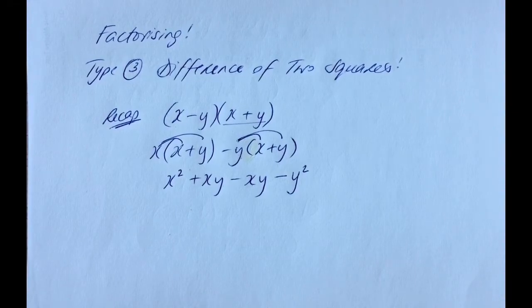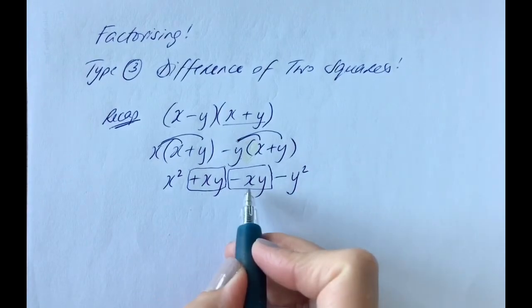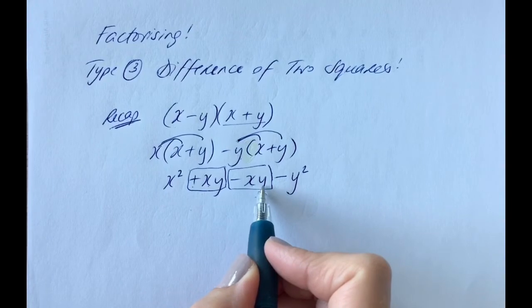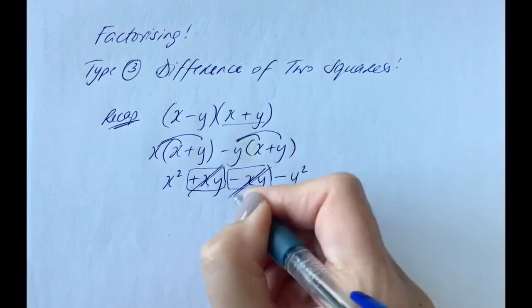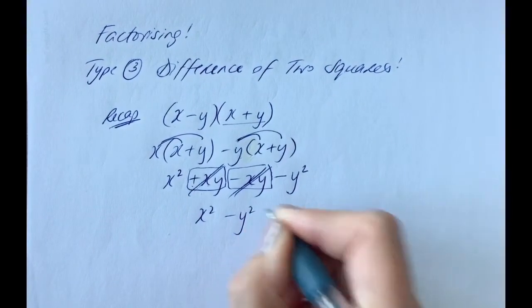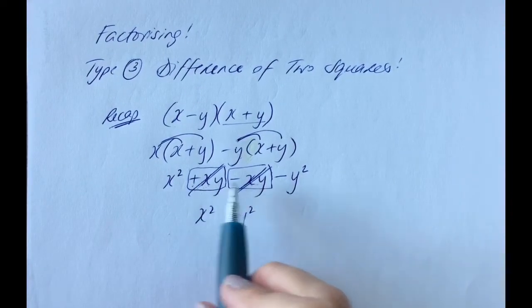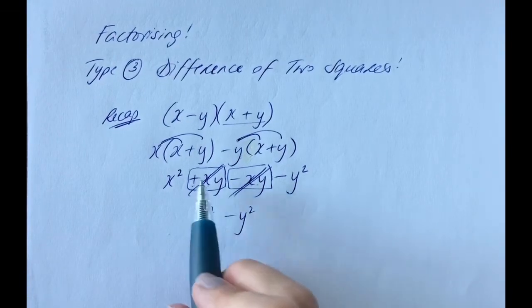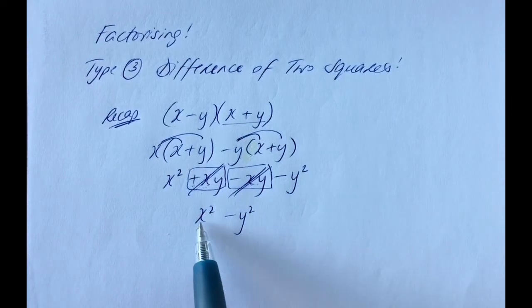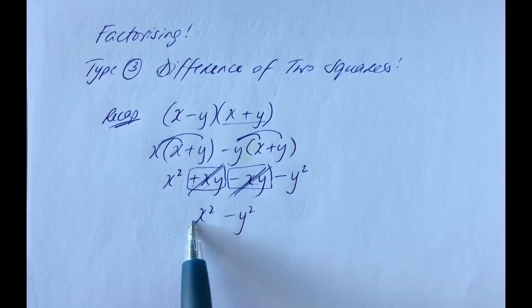Now we look to tidy up or simplify the terms — in other words, add together the things that are the same. The things that are the same are the xy terms. If you have a plus xy and a minus xy, they cancel each other out, so we're left with nothing in the middle. The only two terms left as our final answer are x squared minus y squared.